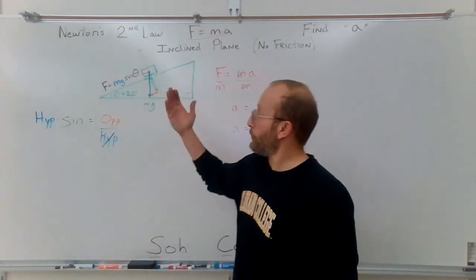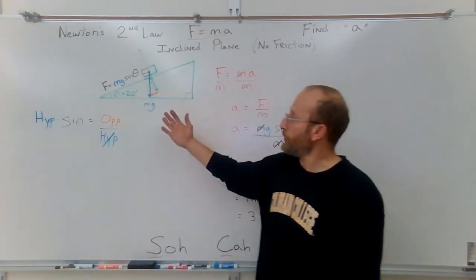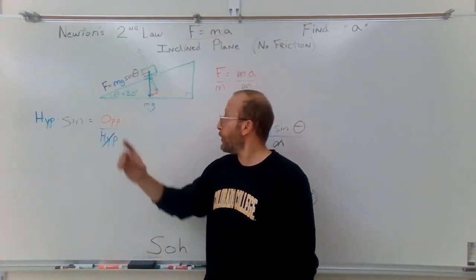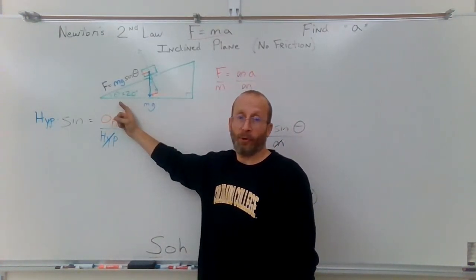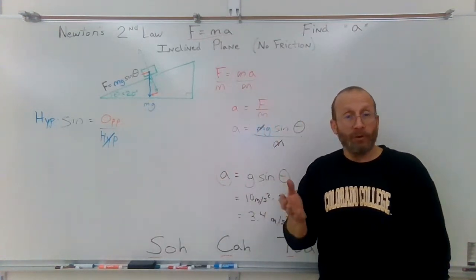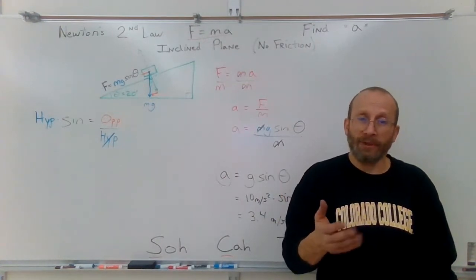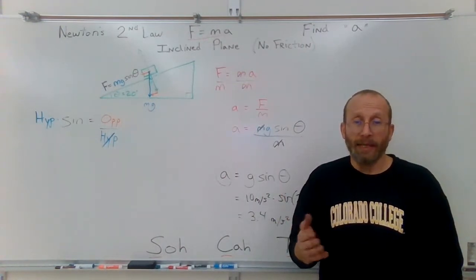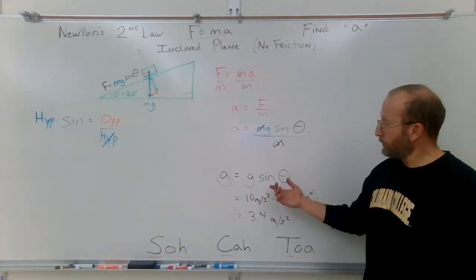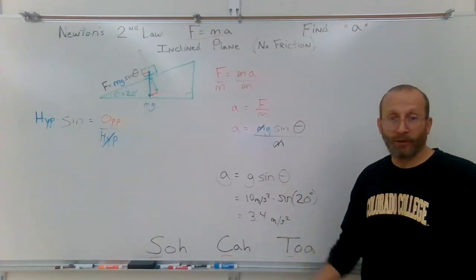Now you understand how we derive this equation and where it comes from. Hopefully you appreciate that all you need at the sledding slope is the angle — how steep is the slope. For this problem you don't need mass, how much you weigh. All you need is the angle of the slope times the sine of it times the acceleration of gravity, and you're done.